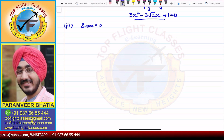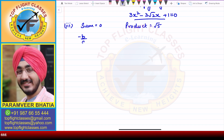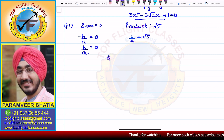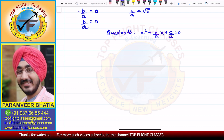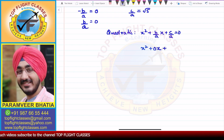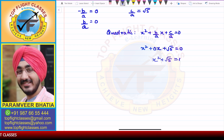For the third part, the sum is 0 and the product is √5. Sum = 0 means -b/a = 0, so b/a = 0. Product = c/a = √5. Writing the quadratic: x² + (b/a)x + c/a = 0 gives x² + 0·x + √5 = 0, which simplifies to x² + √5 = 0. This is the required quadratic.